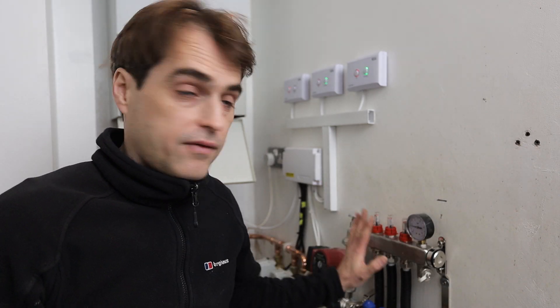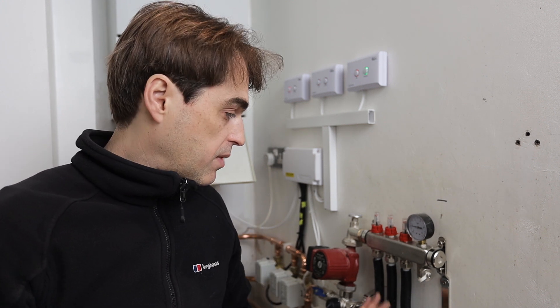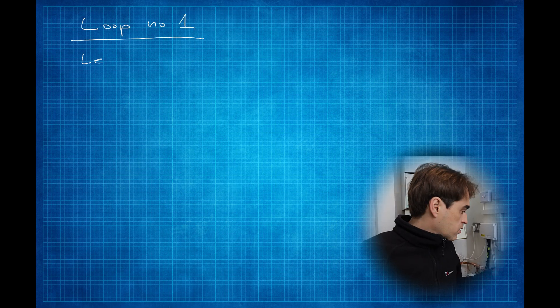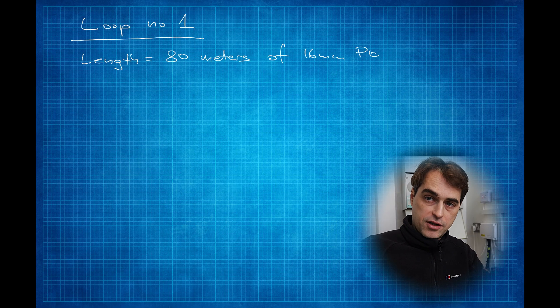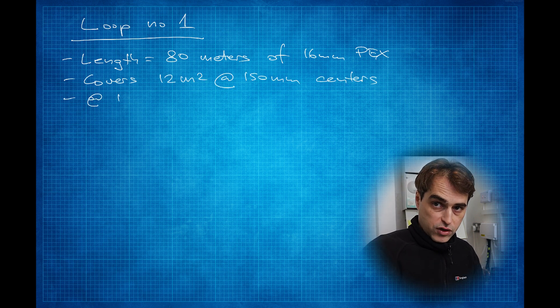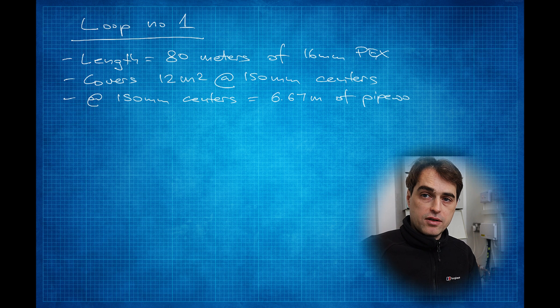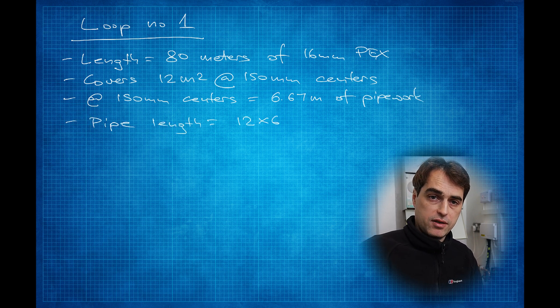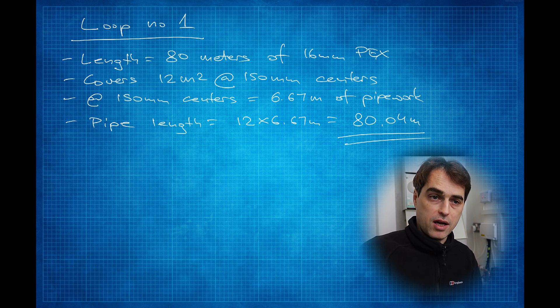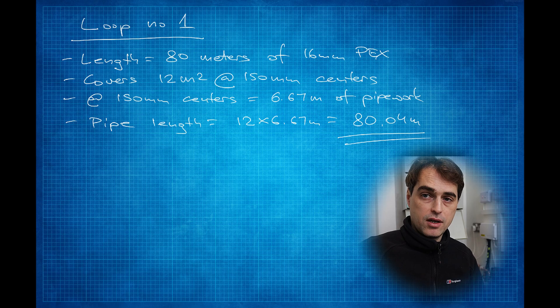To be able to set the flow meters to correct flows, we first have to set the pump. The pump has to do two things: overcome the most restrictive circuit on the manifold — which is the longest length of pipe — and at the same time provide correct flow through all the loops. Our longest loop is loop number one at 80 linear meters of pipework, covering 12 square meters at 150mm pipe centers.